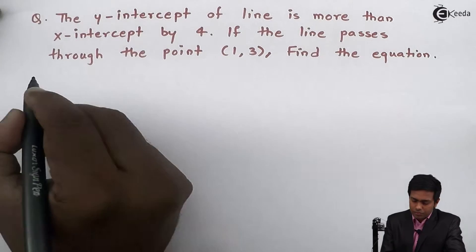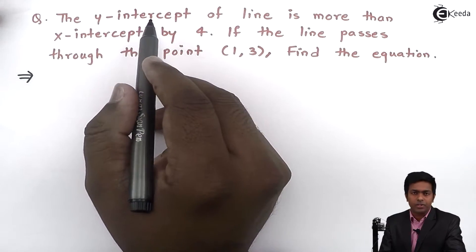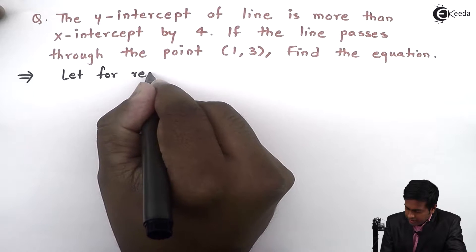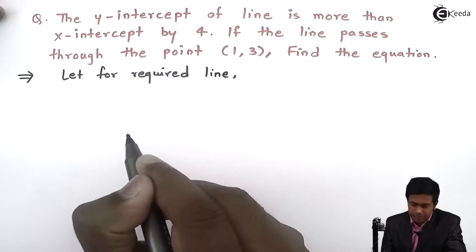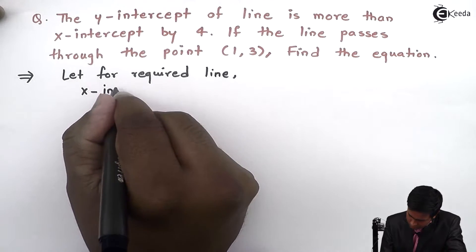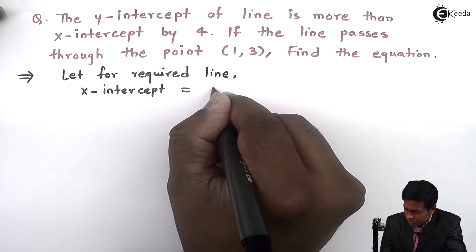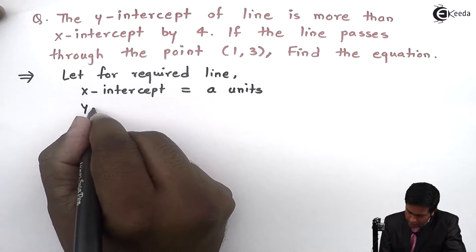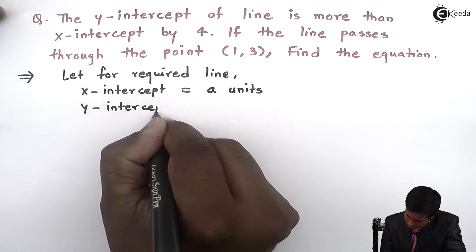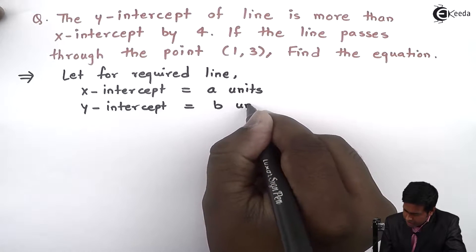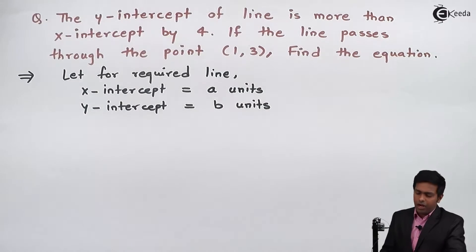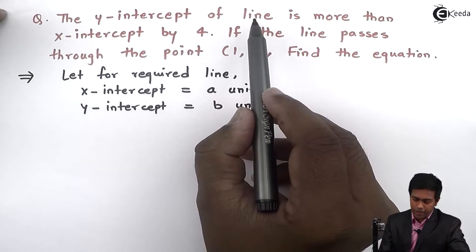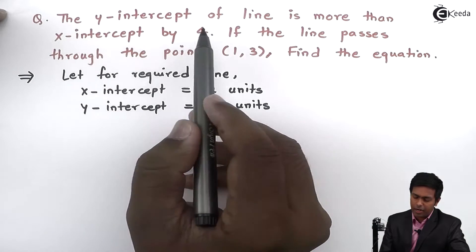Since the x-intercept and y-intercept are not given directly, let us assume for the required line that the x-intercept is equal to a units and the y-intercept is equal to b units. Now let us apply the given condition: the y-intercept of the line is more than the x-intercept by 4.